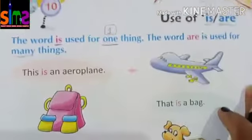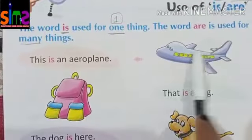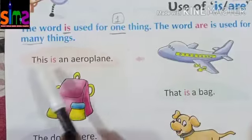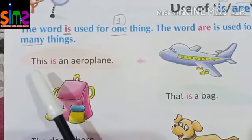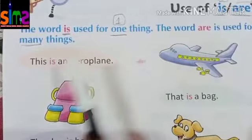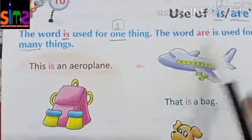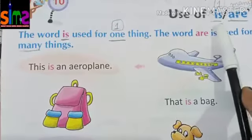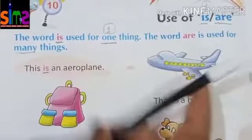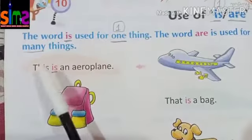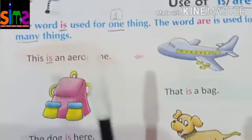So kids, what is this? This is an aeroplane. This is only one aeroplane. We use 'is' for only one thing, so we say: 'This is an aeroplane.'